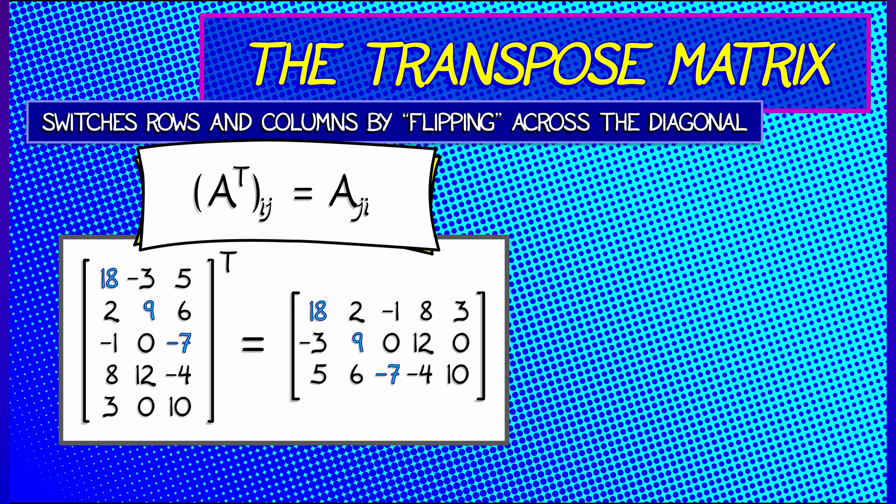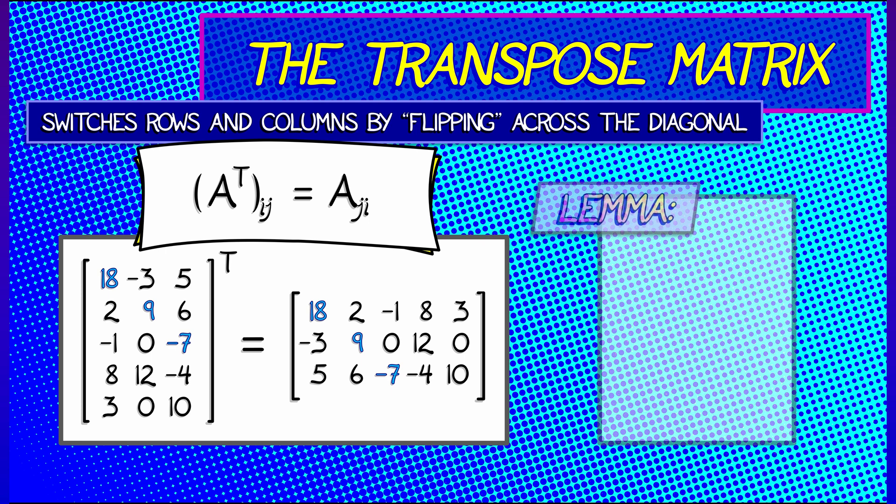So for example, a 5 by 3 matrix when transposed gives you a 3 by 5 matrix, keeping the diagonal the same but exchanging the rows and the columns in the manner demonstrated.